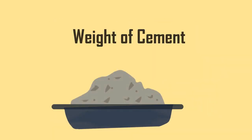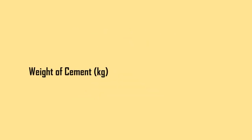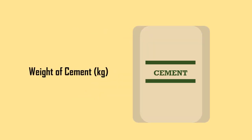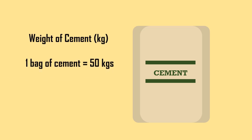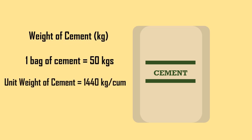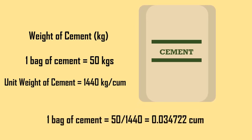Next, the weight of cement. Generally, the weight of cement is expressed in kg, and one bag of cement is 50 kg. The unit weight of cement is 1440 kg per cubic meter. Therefore, one bag of cement equals 50 divided by 1440, which is equal to 0.034722 cubic meters.